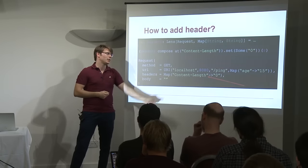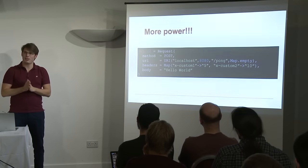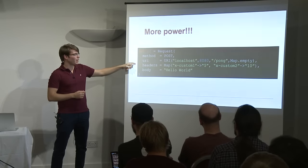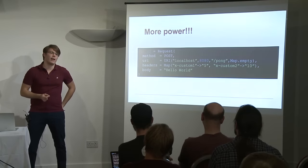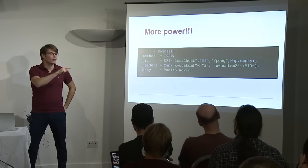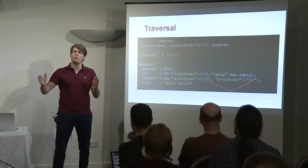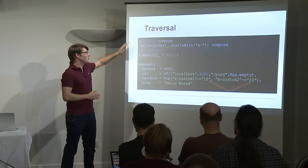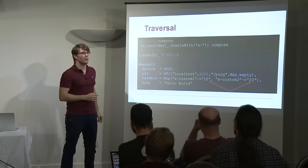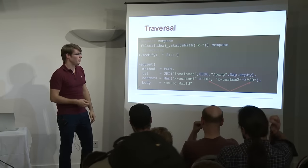If I want to insert a header inside my HTTP request, I can use the headers lens to zoom from Request to Headers, then use 'at' since headers is just a map, and then set it using Some — which will insert it inside the map. I'm also showing something I didn't present today, something a bit more powerful: a traversal that focuses into every single header whose key starts with 'x-', then converts all string values to integers and multiplies them by two. Traversals are optics that permit focusing into several elements at the same time.